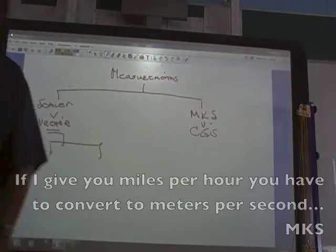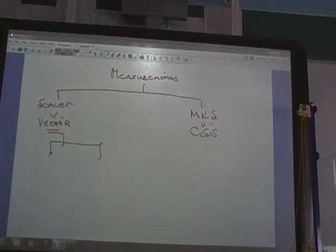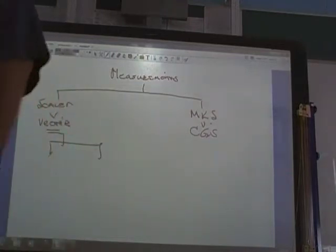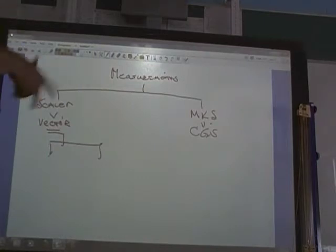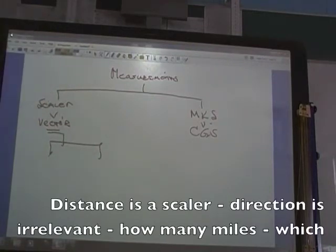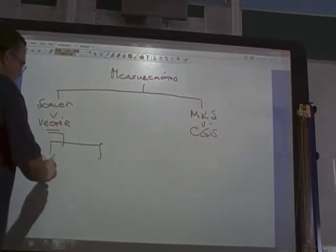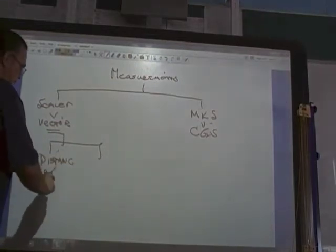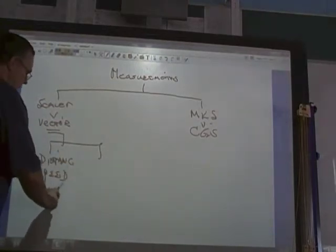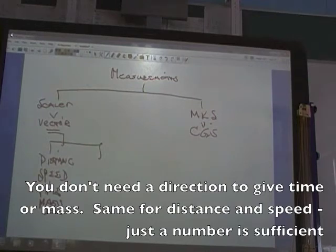So scalar versus vector. Distance, speed, time, mass are all scalars because all you need is a number or a magnitude. So if I go to Cape May, 150 miles south, and then come back to Hawthorne, what's my distance? 300. Agreed? What is my displacement? If I go to Cape May and come back, my displacement is zero. So distance is a scalar. Speed is a scalar. Time and mass are scalars. All we care about is a magnitude, a number.